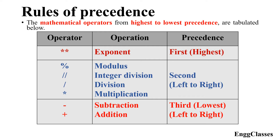These second-tier operators are executed from left to right. If a Python expression has more than one of these operators, we go from left to right. The modulus operator is used to find the remainder. Integer division — for example, five divided by two — gives only the integer part.